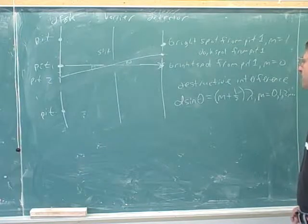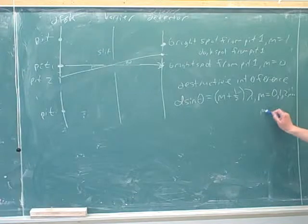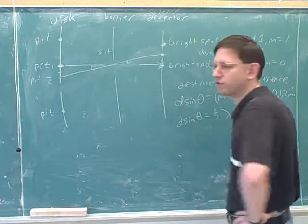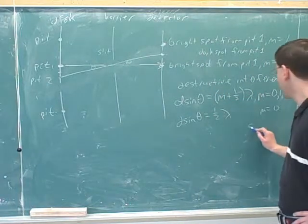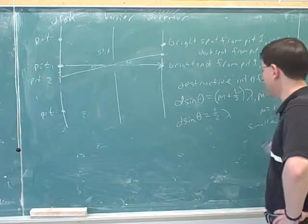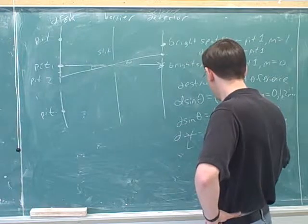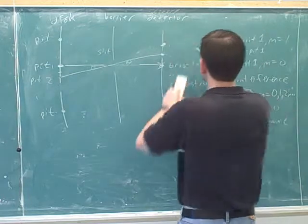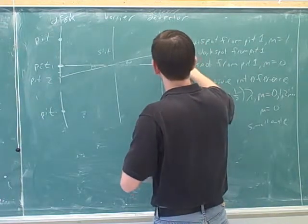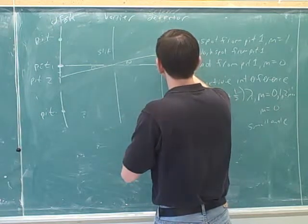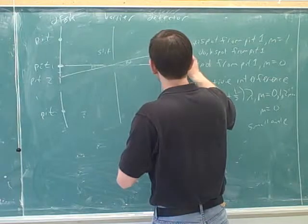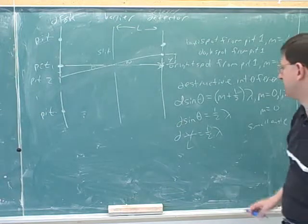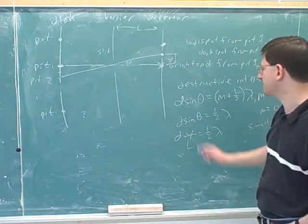Remember, we want to focus on the first dark spot. The first dark spot is when m is 0. So that would give us this formula over here. Or if we have a small angle, remember, we could use the small angle approximation. The sine of theta is approximately the same as the tangent of theta.